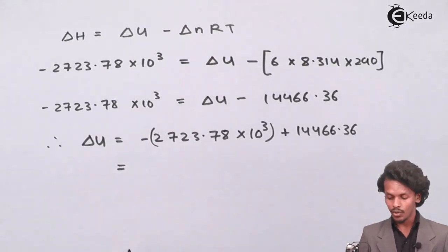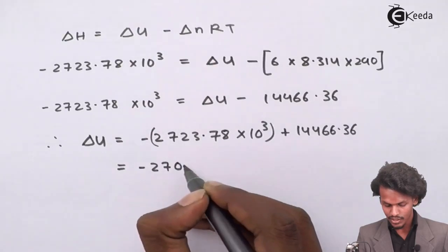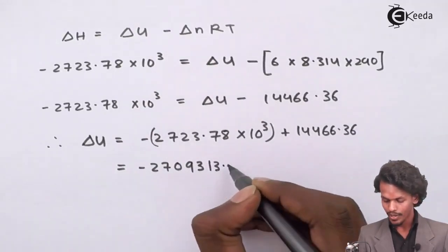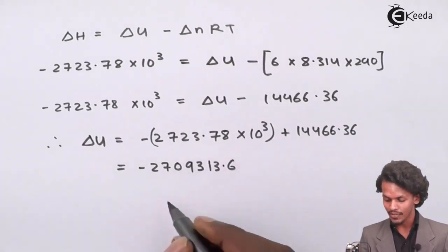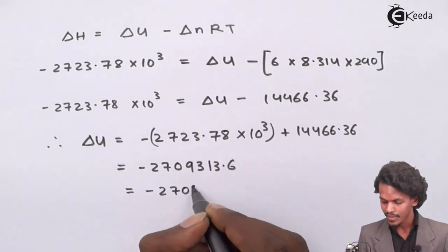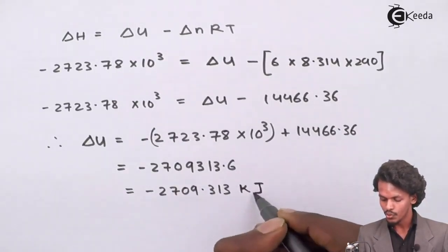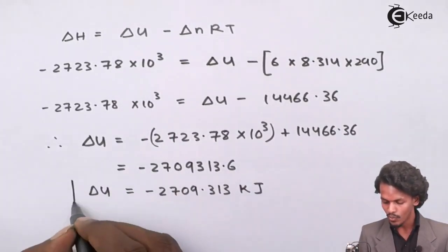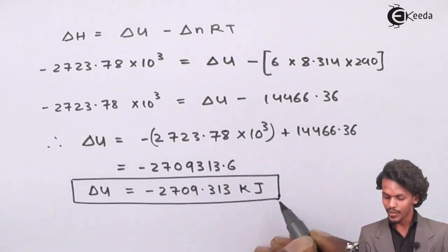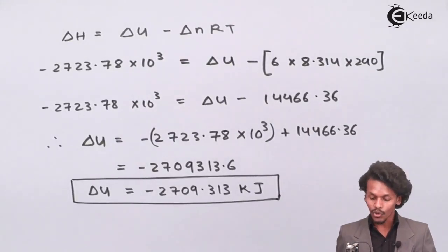The result is delta U = minus 2,709,313.6 J, which can be written as minus 2709.313 kJ. This is the value of delta U, or the heat of combustion of glucose at constant volume.